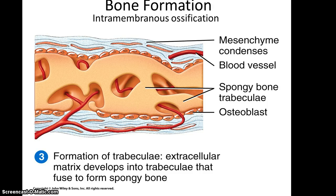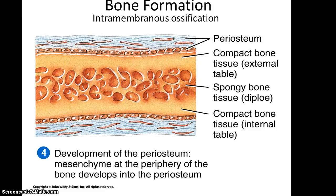The first type of bone formed is spongy bone with all of its trabeculae. Then on the outside of this spongy bone, the mesenchyme tissue condenses until eventually the spongy bone is surrounded by two sheets of compact bone, giving us that sandwich-like structure. The mesenchyme tissue will also form the periosteum — the fibrous and osteogenic layers that surround the bone itself.